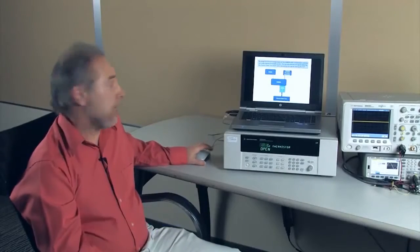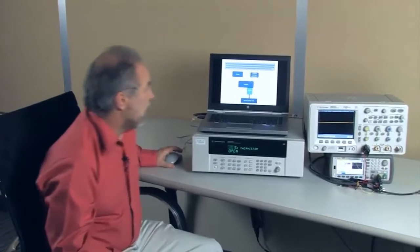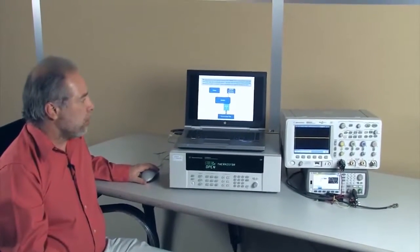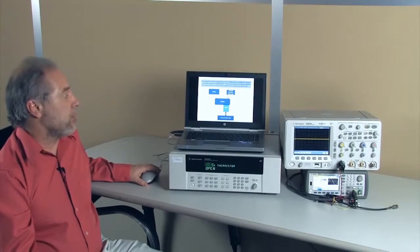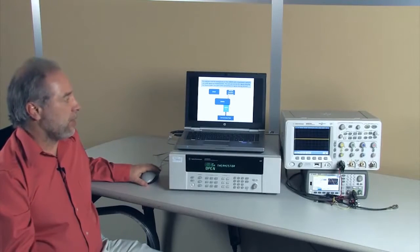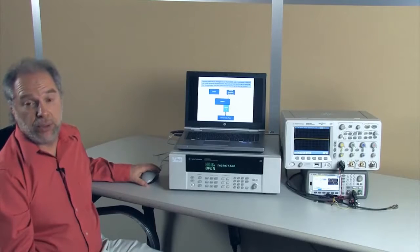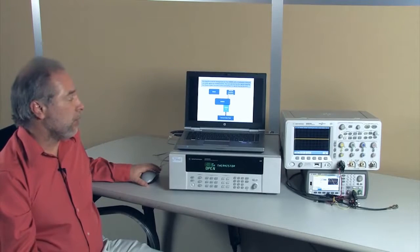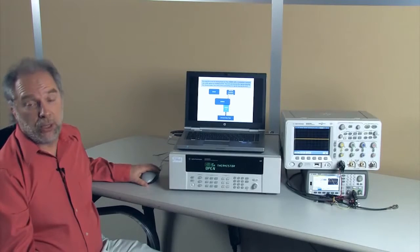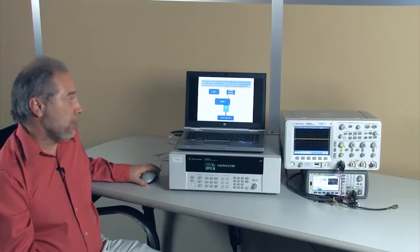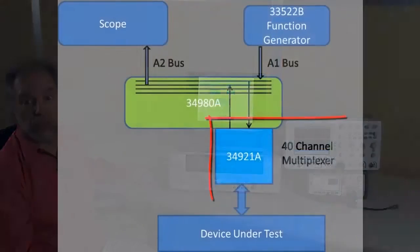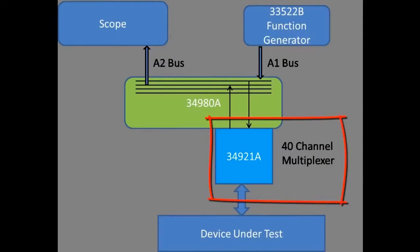When you are testing a device under test, you normally have multiple locations on the device that you want to either inject a signal into or measure a signal. One of the ways to look at all of those different points is to use a multiplexer card. In this case, we use the 34921, which is a 40-channel multiplexer card that's plugged into the 34980.